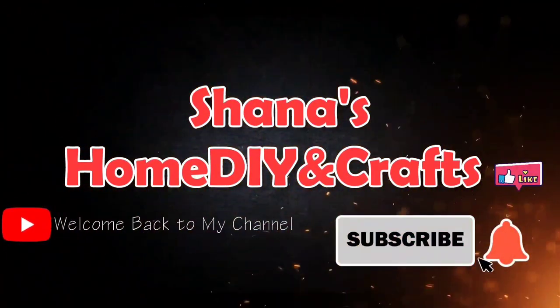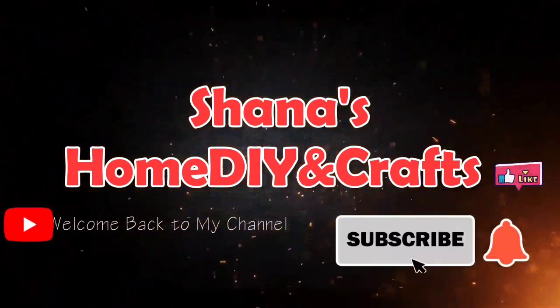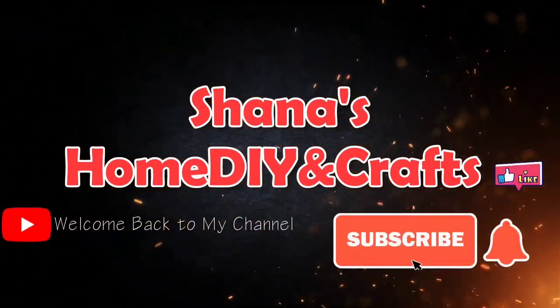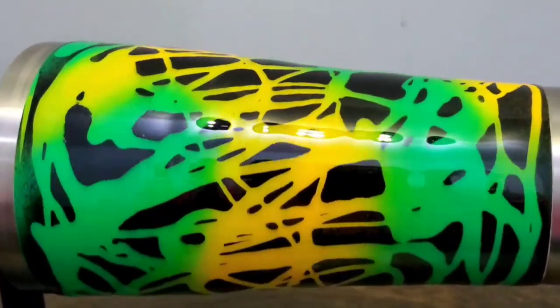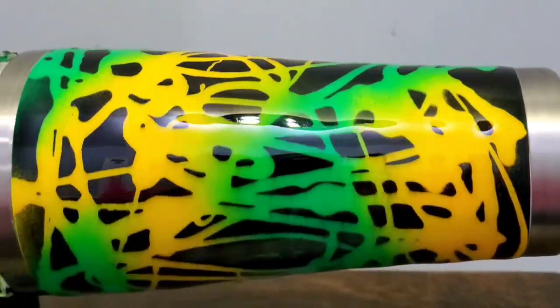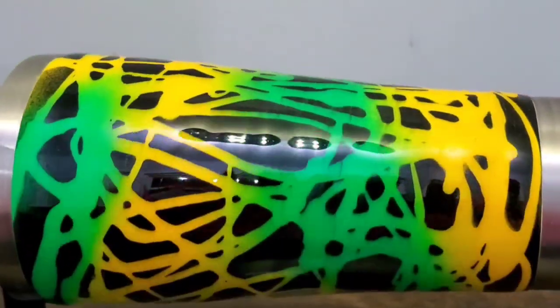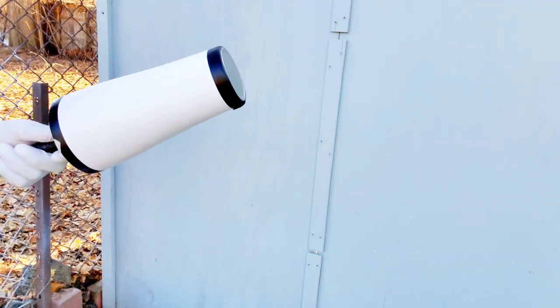Hey guys, welcome back to another tutorial by Shayna's Home DIY and Crafts. In today's video I'll be showing you how to use the Dawn dish soap method on a tumbler. If you want to see how I do so, keep on watching. If you haven't hit that subscribe button yet, please go ahead and do so. Also make sure you hit that notification bell so you can be the first to get my next upload.